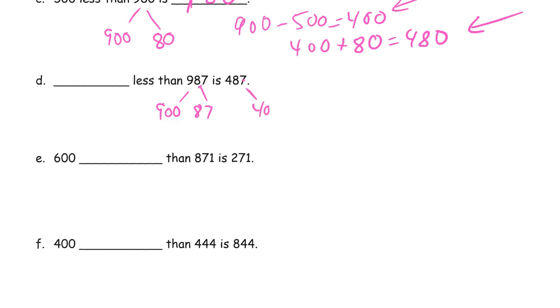This one is 487. So you're just looking at the difference between 900 and 400. Minus 400 equals 500.